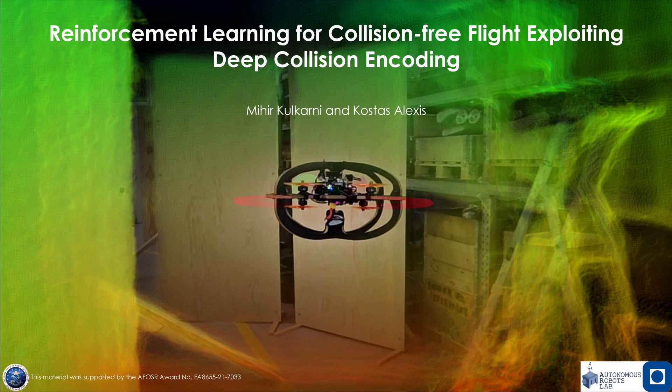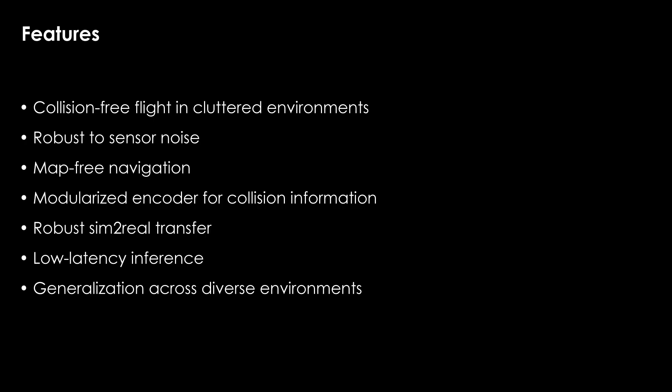We present our work on reinforcement learning for collision-free flight exploiting deep collision encoding. We propose a deep reinforcement learning based method for safe, low latency, map-free navigation in cluttered environments. Exploiting a modularized encoder that captures collision information using both simulated and real depth images, we train a reinforcement learning policy completely in simulation. Our approach can be transferred from sim to real and generalized across environments.